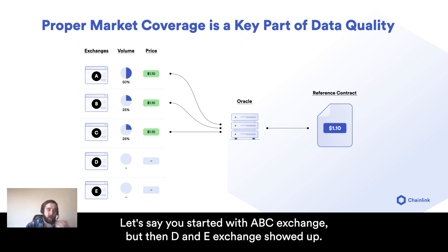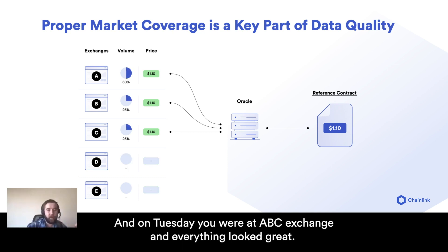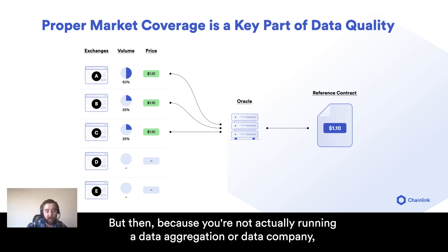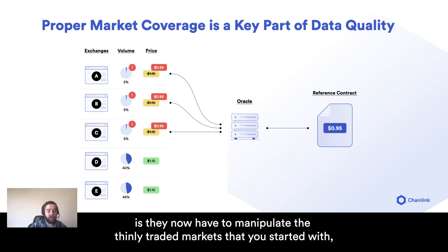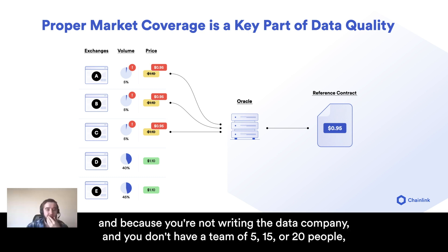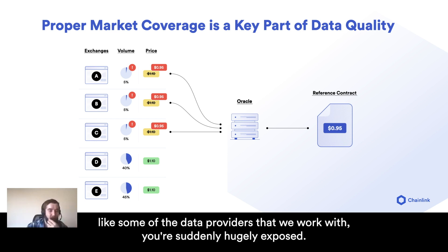Let's say you started with ABC Exchange, but then D and E Exchange showed up. On Tuesday you were at ABC Exchange and everything looked great. But because you're not actually running a data aggregation or data company, D and E Exchange show up and now they have all the volume. All an attacker has to do is manipulate the thinly traded markets that you started with. And because you're not running a data company and you don't have a team of 5, 15, or 20 people like some of the data providers we work with, you're suddenly hugely exposed.